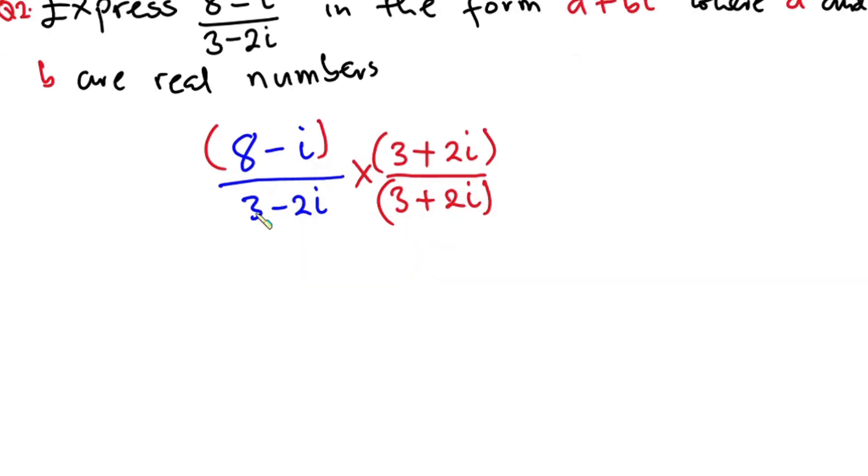All right, so let's multiply the top first. 8 times 3 is 24. Then 8 times 2i is 16i. Now we are done with the 8. Let's come to the minus i. Minus i times 3 is minus 3i. Then minus i times 2i we have negative 2i squared. All divided by...